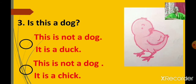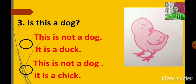Number three. Is this a dog? Look at the picture. Does it look like a dog? Option one: this is not a dog, it is a dog. Option two: this is not a dog, it is a sheep. If it is not a dog, then what is it — a dog or a sheep? The correct answer is option two: this is not a dog, it is a chick.